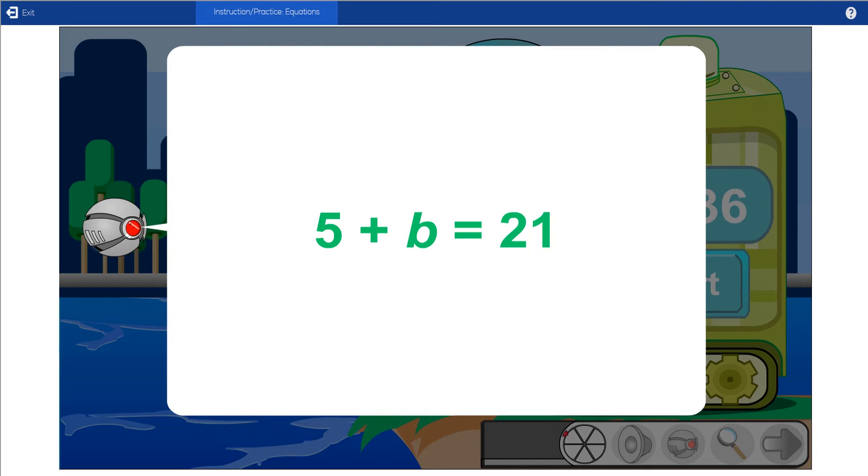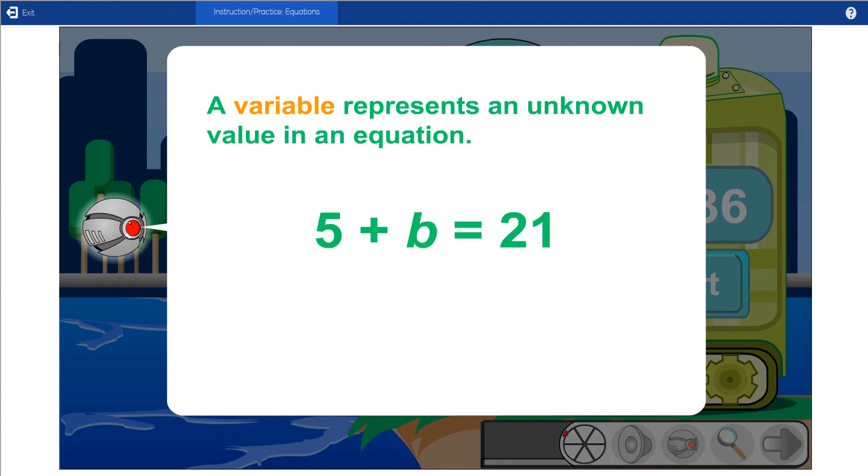An equation must always be balanced so that both sides have the same value. When an equation contains a variable, use a related fact to find the value of the variable.